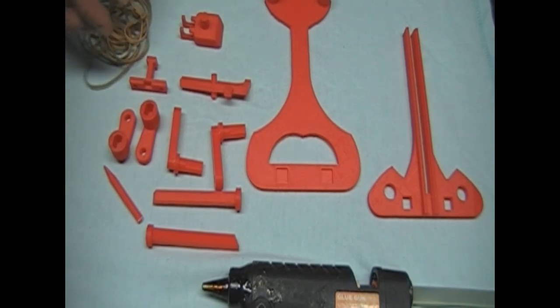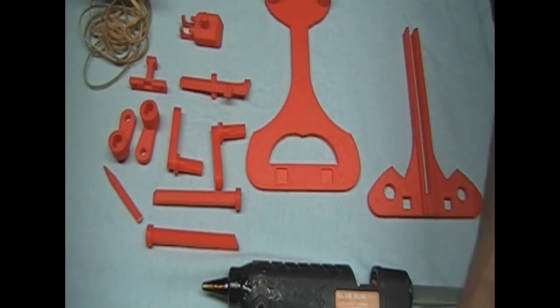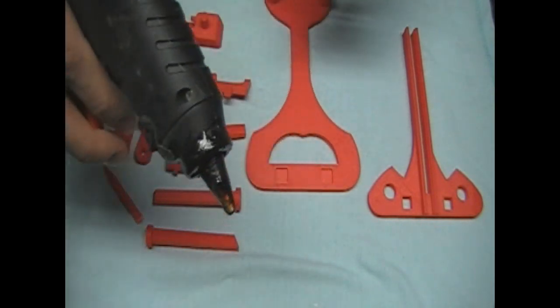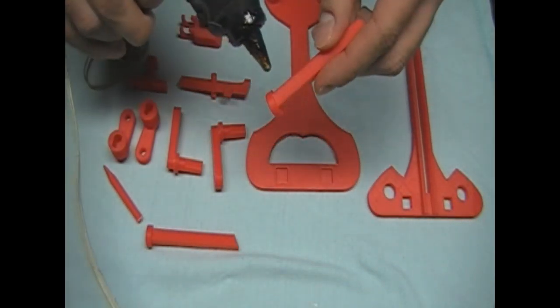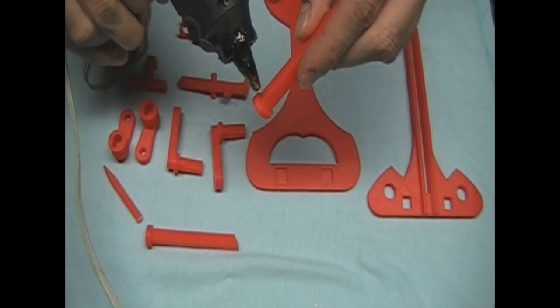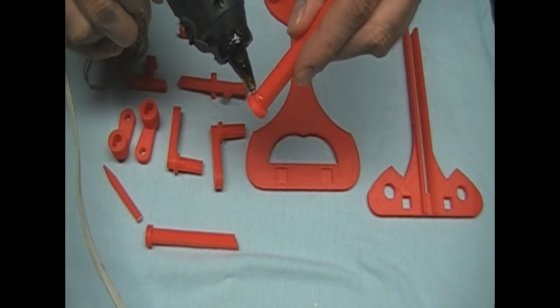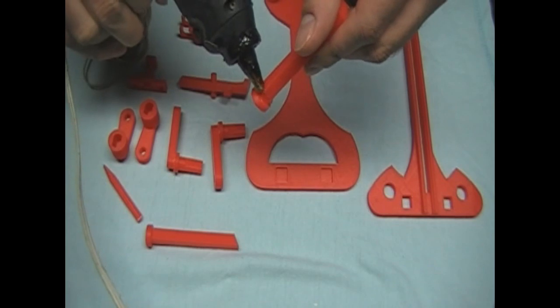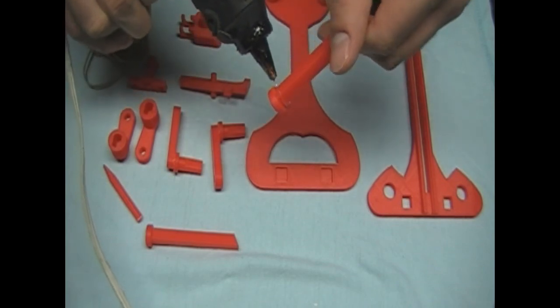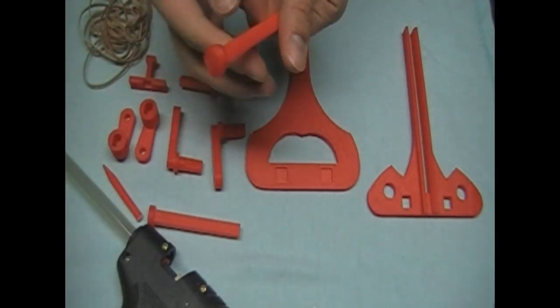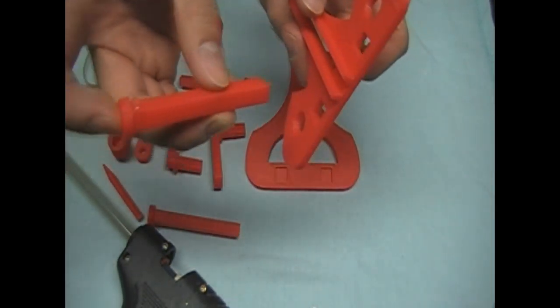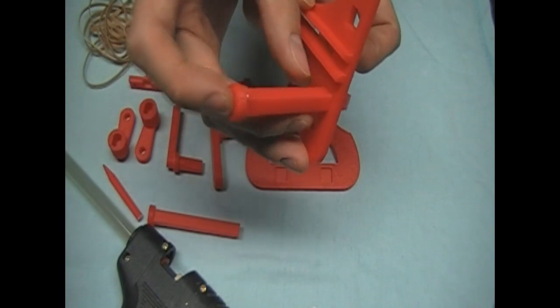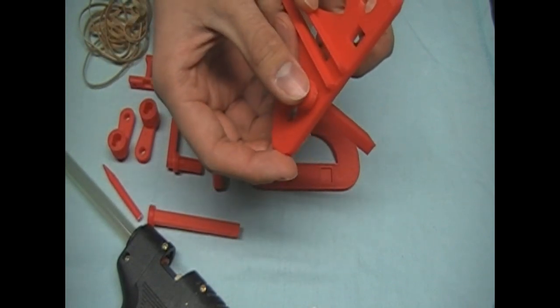Once you have those, you're going to take the hot glue gun and we're going to put just a little bit on the edge right underneath the round part of these two supports and insert them into the top of the Ballista. Make sure that the angle is pointing outward. Press down.